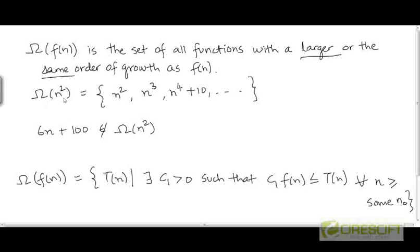The set big Omega of n² is going to contain the function n² because n² has the same order of growth as n². It is going to contain n³ because n³ has a larger order of growth than n². Similarly, it is going to contain n⁴ plus 10 because this function has a larger order of growth than n². So there are going to be infinitely many functions in this set, as in the case of the other two sets.